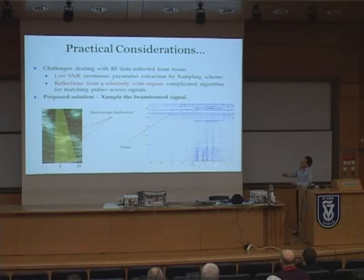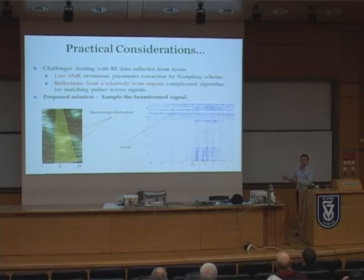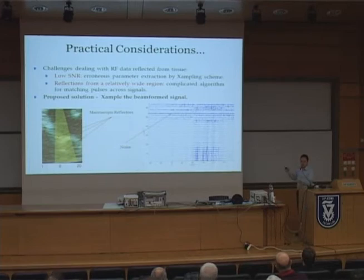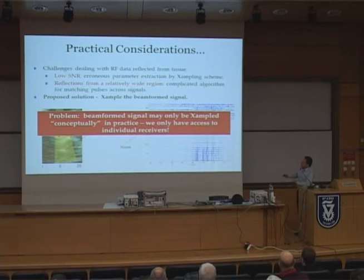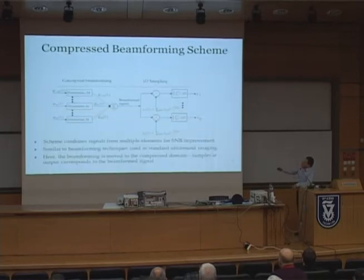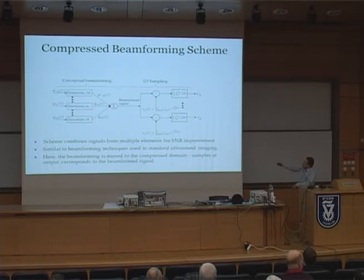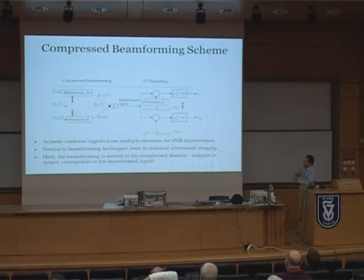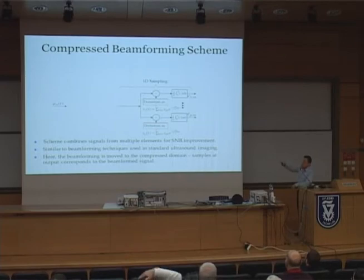Our proposed solution was to sample the beamformed signal. The only problem is that the beamformed signal does not exist in the analog domain — it is generated by ultrasound devices from the samples of the analog signals. Our idea to overcome this was to conceptually assume we could generate the beamformed signal in the analog domain, and then fit it into the one-dimensional multi-channel sampling scheme. We have the beamforming process which involves distortion, and by rearranging the processing blocks, we can show that we can switch this beamforming distortion with an equivalent distortion applied to the modulating kernels.